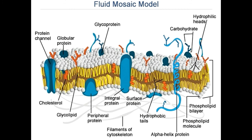While the alpha helical configuration is more common, membrane proteins can also be made of multiple beta strands or beta barrels, which form channels in the membrane.